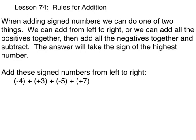The first example says add these signed numbers from left to right. The first thing we would do when doing this is put everything in its own symbol of inclusion with the sign that comes in front of it. So all of these positive signs are going to be included in the parentheses.